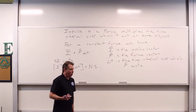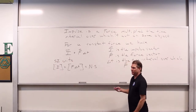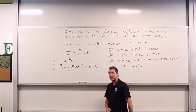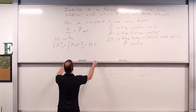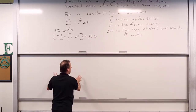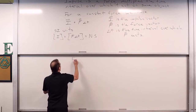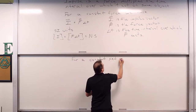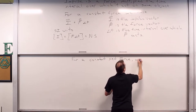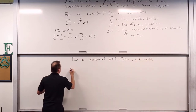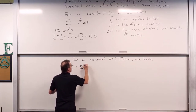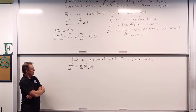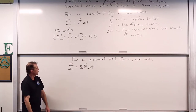Generally what we want to do with impulses is consider a net force, not individual forces. We add up the net effect to figure out the overall impulse given to an object. For a constant net force, I-hat equals σF-hat times ΔT.